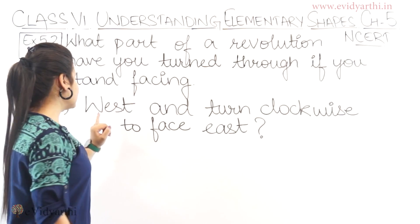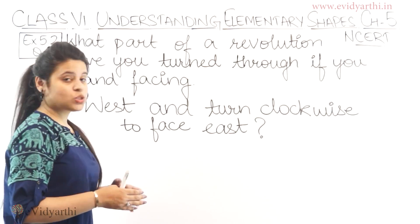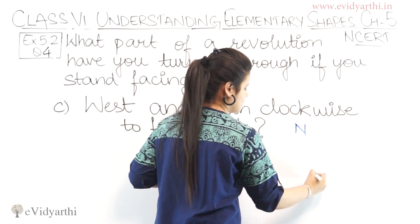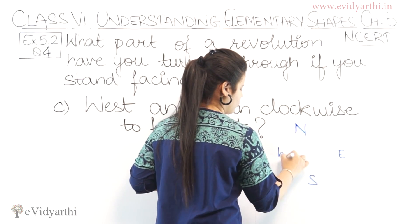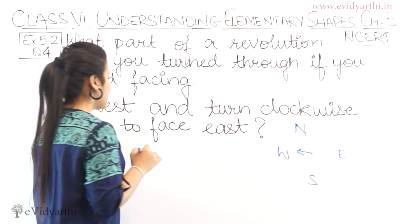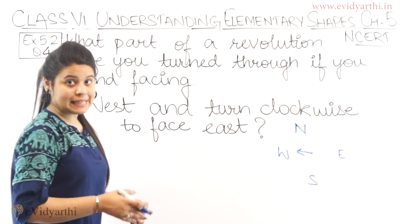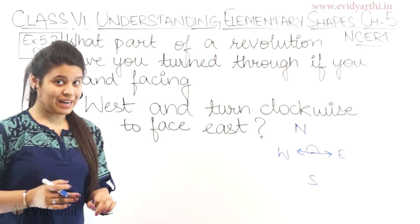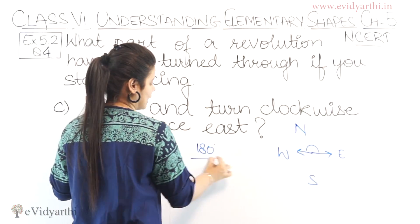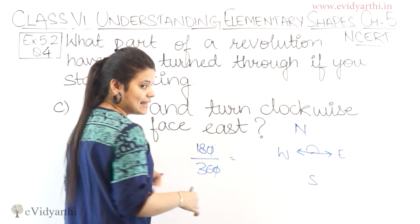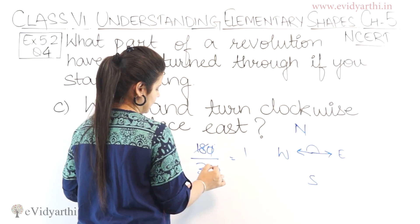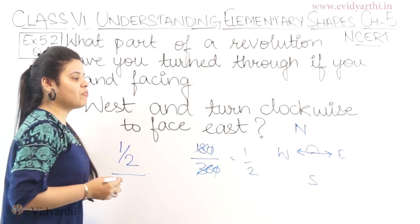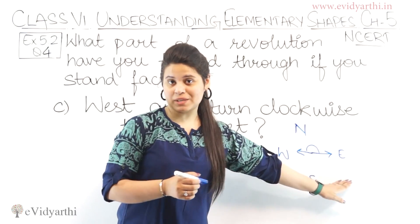Now coming to part (c): start facing west and turn clockwise to face east. Drawing the directions — north, south, east, west — you start from west and turn clockwise to face east. This is a straight angle, which means 180 degrees. So 180 upon 360: 18 over 36 simplifies to 1 upon 2. This means half of a revolution is needed to go from west to east clockwise.